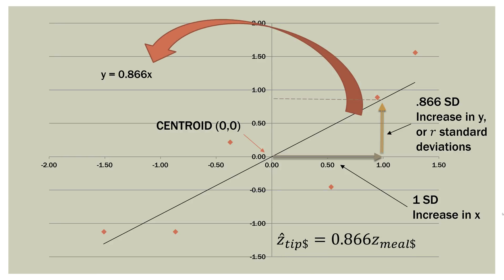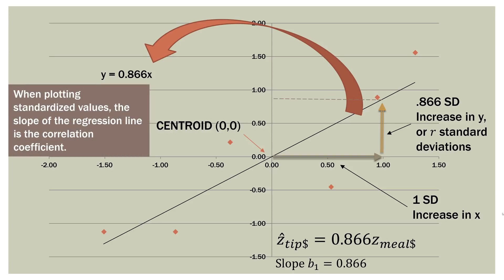So if we had an equation, it would be this. The z-score for tip is equal to 0.866 times the z-score for the meal. And that's how we would represent this regression equation, based on standardized scores. In plotting the standardized values, the slope of the regression line is the correlation coefficient.